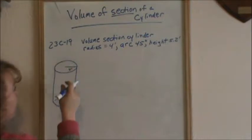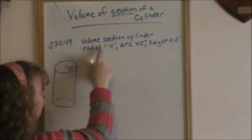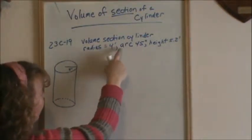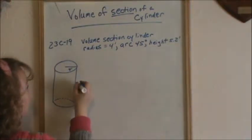So we're looking at 23C19, and what we're told is we want the volume of a section of a cylinder. The radius is 4 feet, the arc of the section we're looking for is 45 degrees, and the height is 5.2 feet.